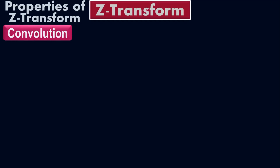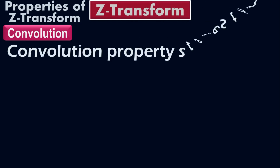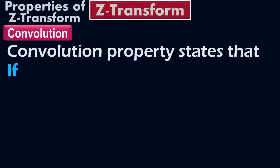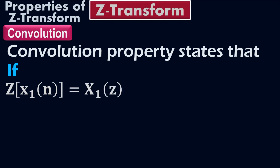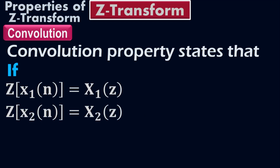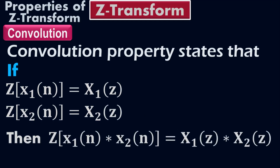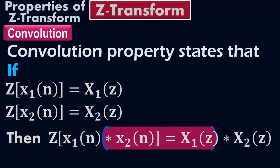Let's do the seventh property of Z-transform, which is convolution. According to the convolution property, if Z-transform of X1(N) equals X1(Z) and Z-transform of X2(N) equals X2(Z), then the Z-transform of X1(N) convolved with X2(N) equals X1(Z) convolved with X2(Z). That's what the convolution property states.